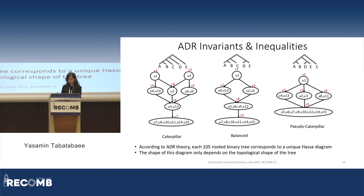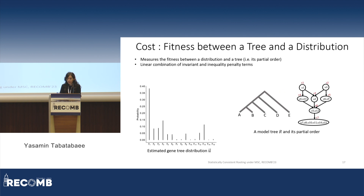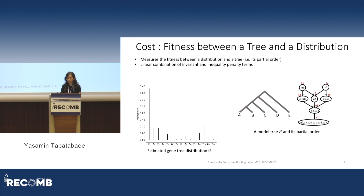According to ADR theory, each of the 105 rooted binary trees corresponds to a unique Hasse diagram, and the shape of this diagram depends only on the topological shape of the tree. We can see examples of the three possible Hasse diagrams for the three topological shapes. A main component of both the QR and QR* algorithms is a cost function that measures the fitness between a quintet distribution estimated from gene trees and the partial order of a rooted five-taxon tree. The goal is that the cost gets minimized for the rooted five-taxon tree that best explains the inequalities and invariants in the distribution.